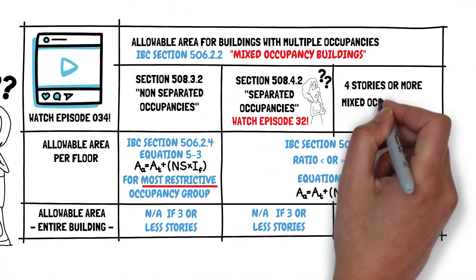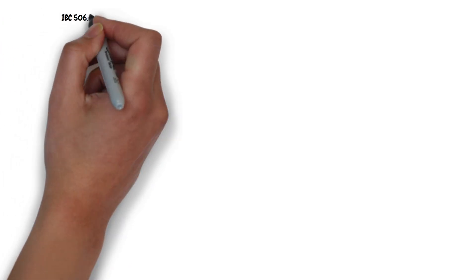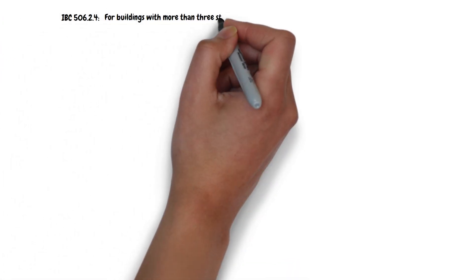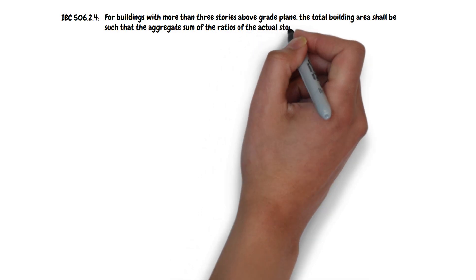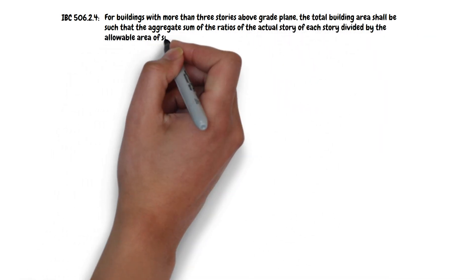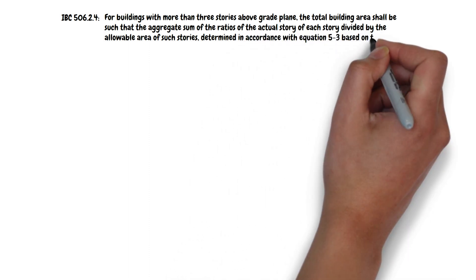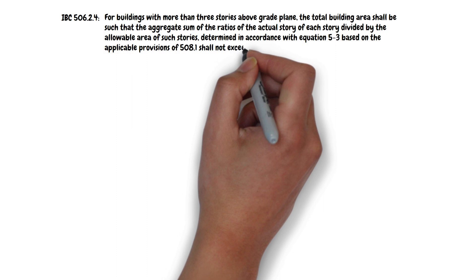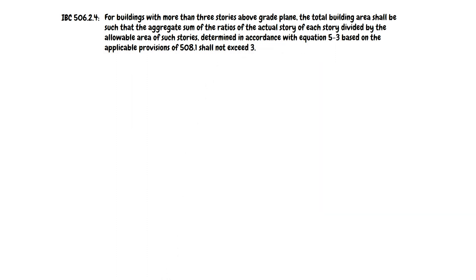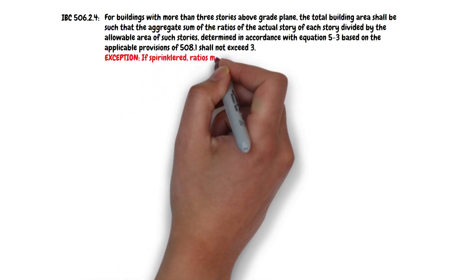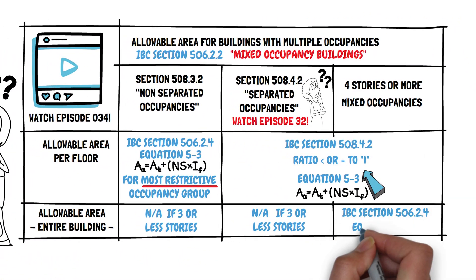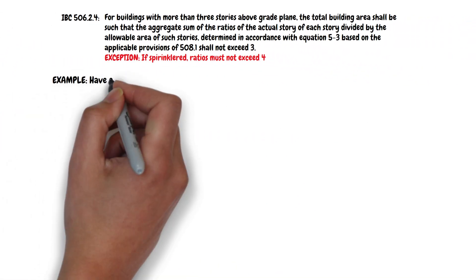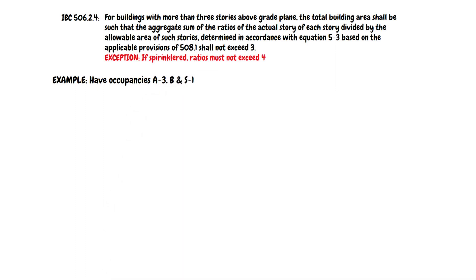Last but not least, let's talk about buildings with four stories or more above grade plane. IBC 506.2.4 states: for buildings with more than three stories above grade plane, the total building area shall be such that the aggregate sum of the ratios of the actual area of each story divided by the allowable area of such stories — determined using Equation 5.3 based on the applicable provisions of 508.1 — shall not exceed 3. The exception is that if the building is sprinklered, the ratios must not exceed 4.